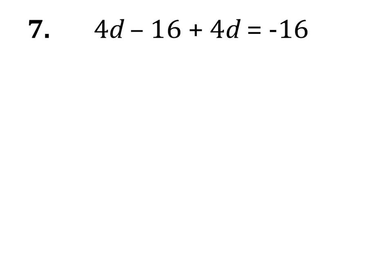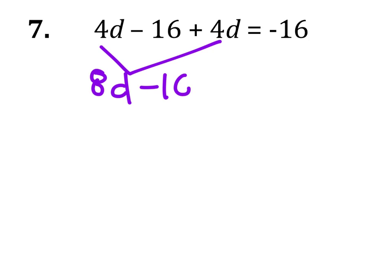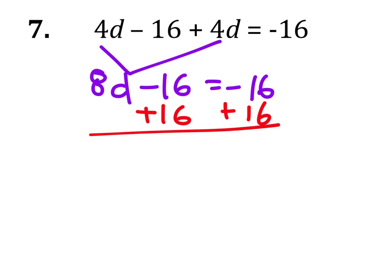Alright, on number 7, the first thing we're going to want to do is to combine the like terms, which is the 4 D's. That gives us an 8D minus 16 equals negative 16. Some of you guys already know what the answer is. We'll add 16 to both sides, and that would give us 8D equals 0.